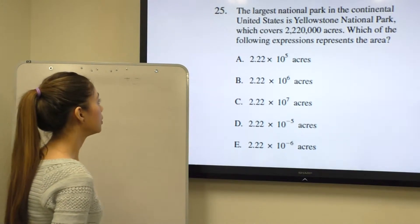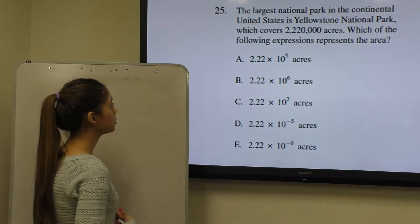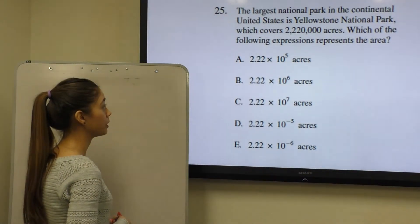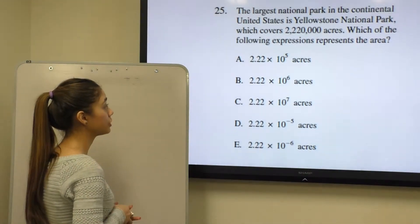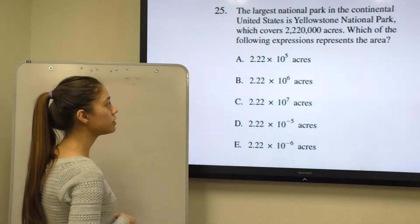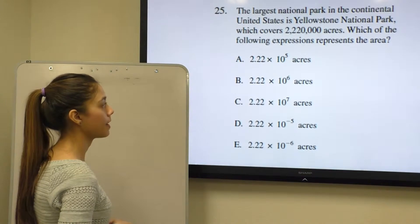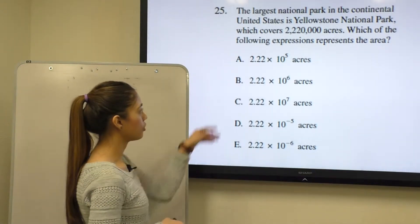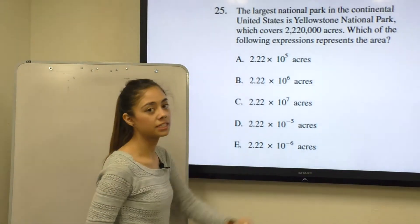Question 25 says: the largest national park in the continental United States is Yellowstone National Park, which covers 2,220,000 acres. Which of the following expressions represents the area? In this case, they're giving us answers in terms of scientific notation.